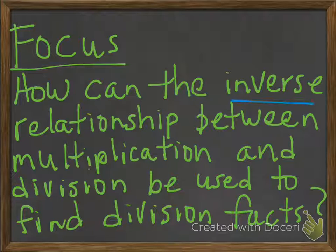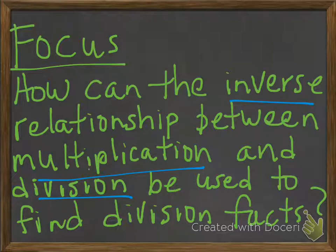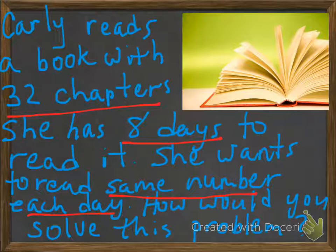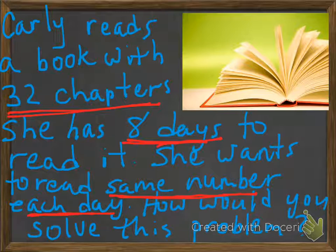How can the inverse relationship between multiplication and division be used to find the division facts? So let's say Carly reads a book and this book has 32 chapters and she has 8 days to read it. She wants to read the same number each day. Notice the key things underlined: 32 chapters, 8 days, and the same number each day. That definitely is a division problem because you start with a large number and want to split it into groups — in this case 8 groups — and find the equal number in each group.